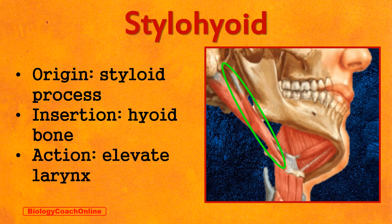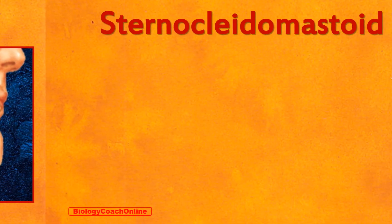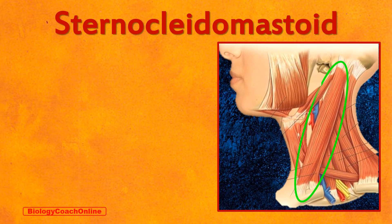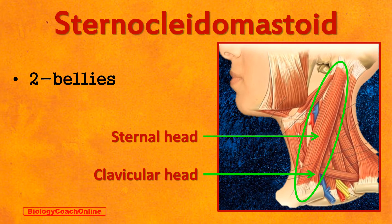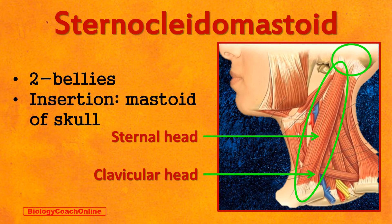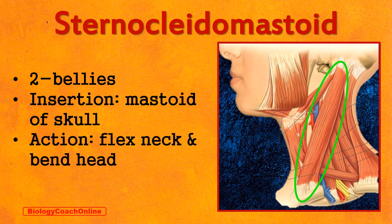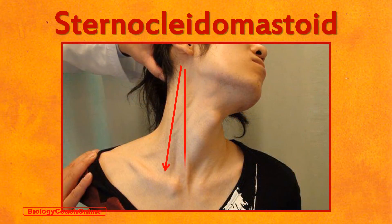We round out the group of five with the sternocleidomastoid. This long muscle has two bellies, or heads. The sternal head has its origin on the sternum, or breast bone. The clavicular head has its origin on the clavicle, or collar bone. Both heads merge, and the muscle has its insertion at the mastoid area of the skull. The sternocleidomastoid acts to flex the neck and bend the head to the side. Here you can clearly see the two heads of the sternocleidomastoid.